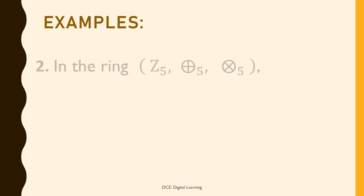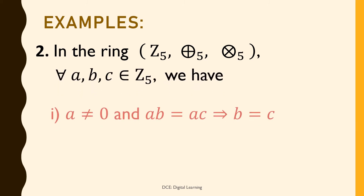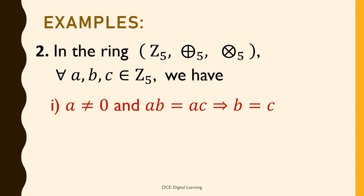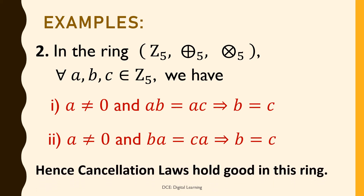Example 2: In the ring (Z₅, addition modulo 5, multiplication modulo 5), for all a, b, c belonging to Z₅, we have: a ≠ 0 and ab = ac implies b = c, and a ≠ 0 and ba = ca implies b = c. Hence cancellation laws hold good in this ring.